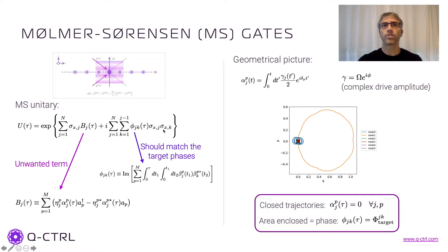So the geometrical picture is in terms of trajectories in phase space. If you are familiar with the structure of this b operator, it looks pretty much like a displacement operator in phase space. And that's exactly what it is. So this α_jp represents a trajectory in phase space. And if we want that in the end of the gate those different degrees of freedom are decoupled, we want those alphas to be zero by the end of the gate.